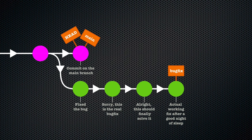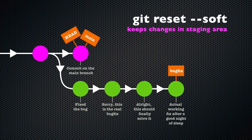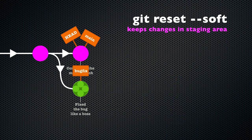You should go with a --soft reset if you would like to keep your changes in the staging area. Typically this means you want to recommit them again — you're simply bundling some commits into one.